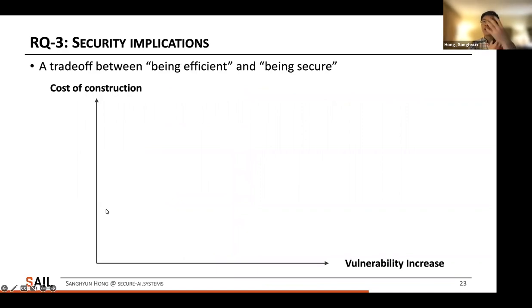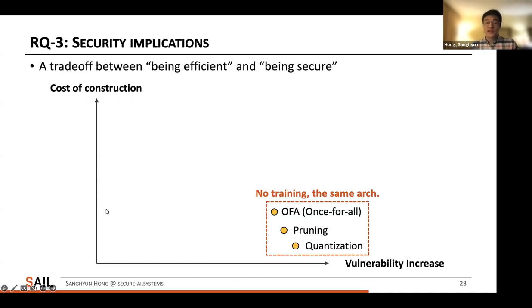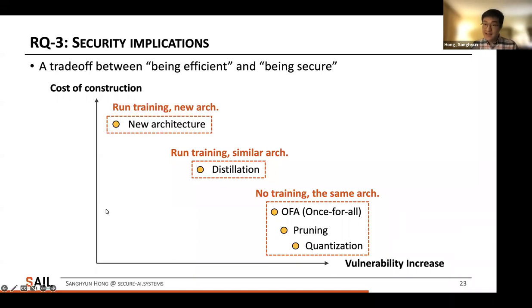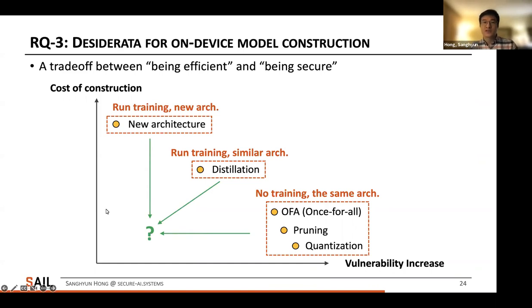From this analysis, we observe a security-efficiency trade-off in efficient deep learning. The x-axis represents vulnerability increase and the y-axis represents the cost of constructing on-device models. Methods like quantization and pruning do not require training and use the same architecture, leading to worst-case vulnerability increase. Distillation is placed in the middle — it trains from scratch but uses a similar architecture. Methods using completely different architectures like NASNet, which also require training from scratch, lead to the least vulnerability increase. This suggests we need to reduce construction cost while keeping vulnerability increase small.